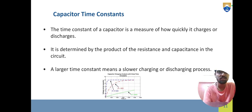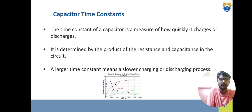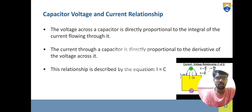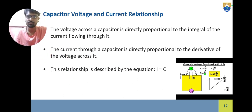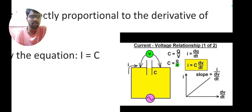The time constant of a capacitor is a measure of how quickly it charges or discharges; it is determined by the product of resistance and capacitance. The voltage across a capacitor is directly proportional to the integral of the current flowing through it. The current through a capacitor is directly proportional to the derivative of the voltage across it. The relationship is described by: I = C·dV/dt. Also, C = Q/V, and I = dQ/dt, which gives I = C·dV/dt. A slope is drawn between I and dV/dt, where C = dI/(dV/dt).